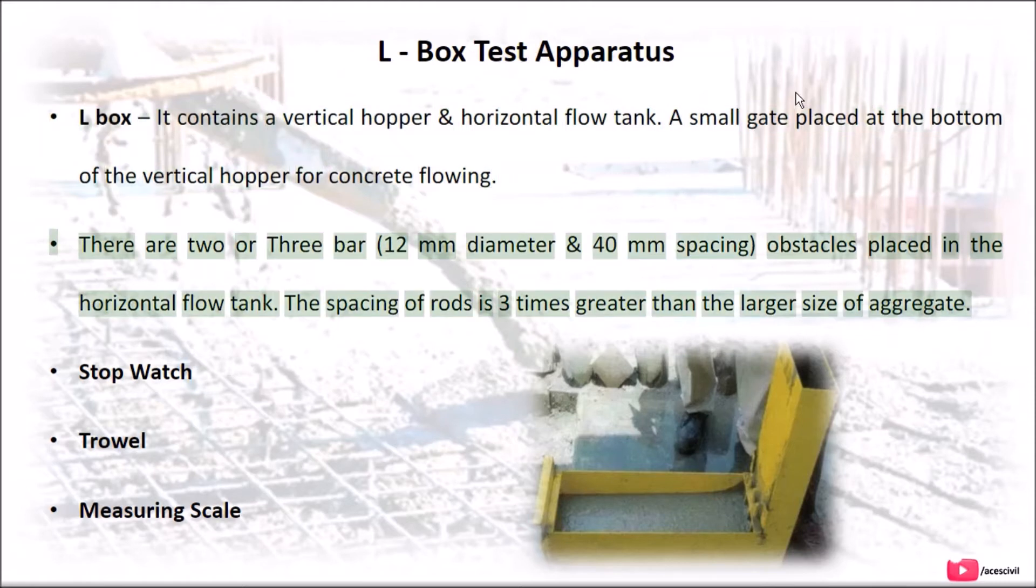There are two or three bars, 12 mm diameter and 40 mm spacing, obstacles placed in the horizontal flow tank. The spacing of rods is 3 times greater than the larger size of aggregate.